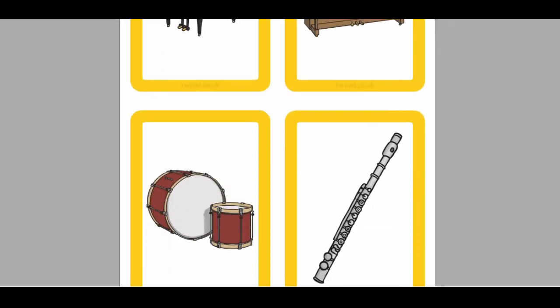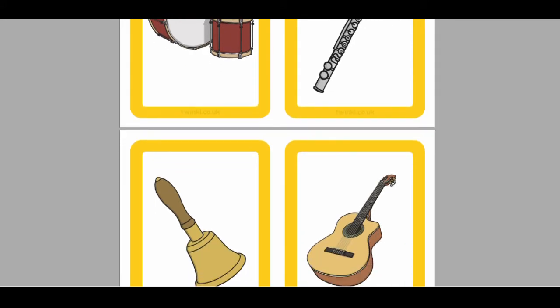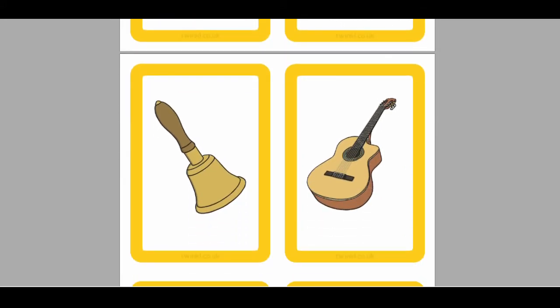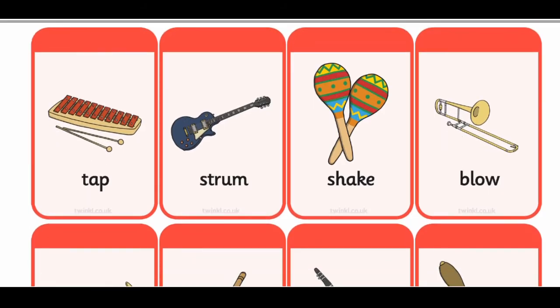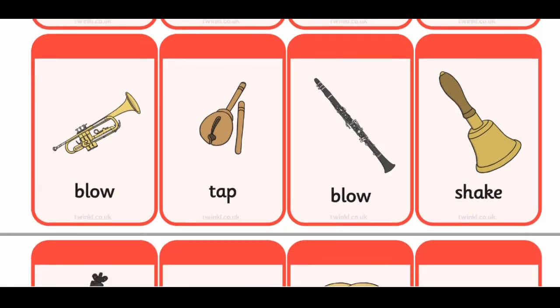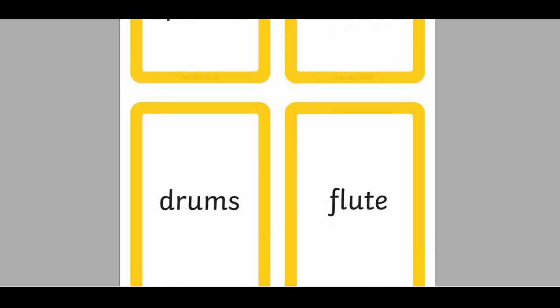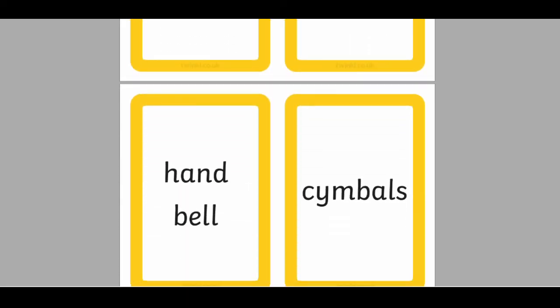Speaking of instruments, Twinkle have a great range of flashcards to help children identify the different kinds, even looking at the verbs that people use to describe playing them. There are options with images, names and a mixture of both. A fun game you can play with your class when they're learning about the different sounds different instruments make is playing a piece of music and asking them to identify what they can hear — what instruments are they listening to?